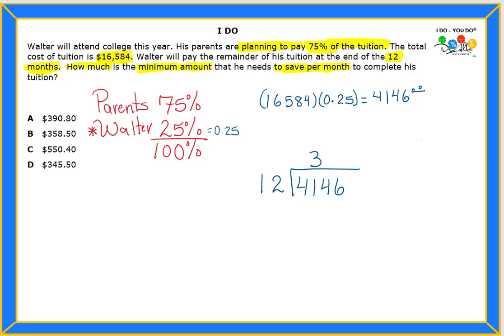So, we're going to divide, which gives us $345.50. And that will be my answer, guys. Letter D, very good.